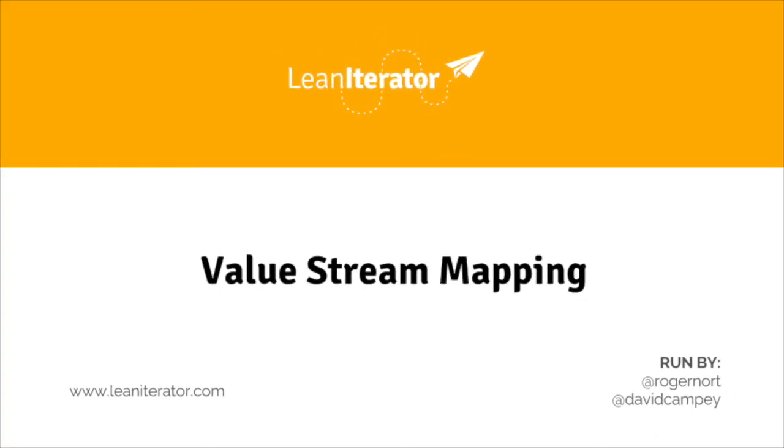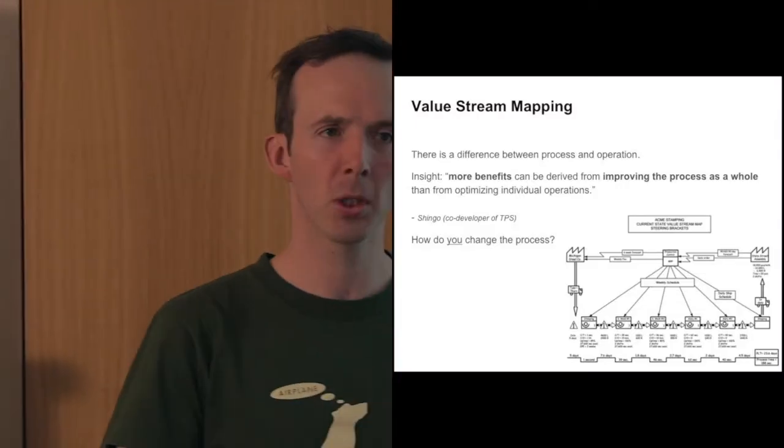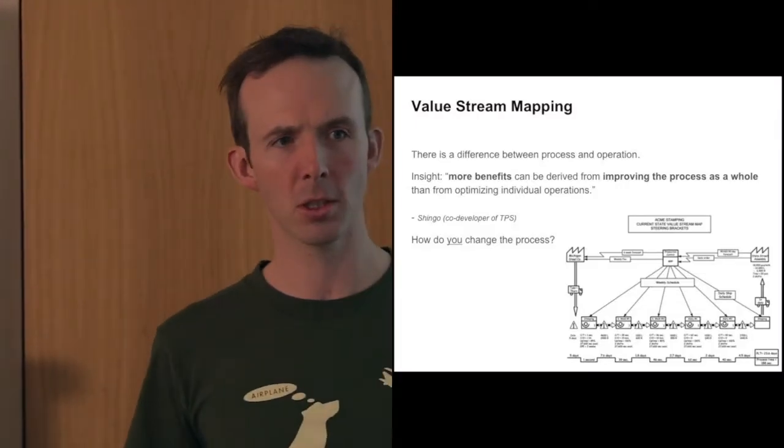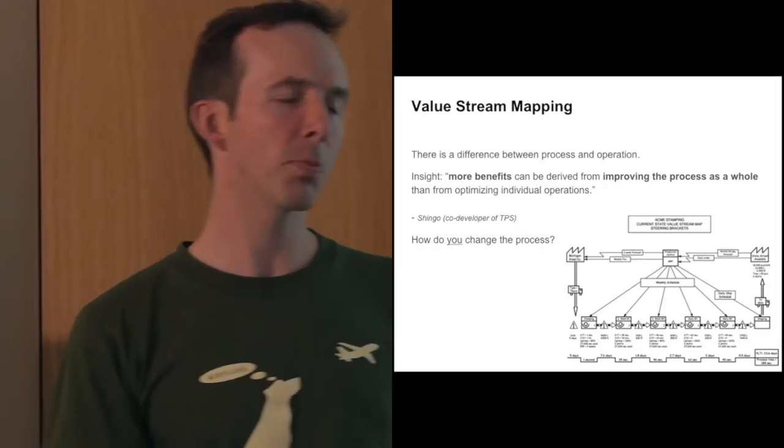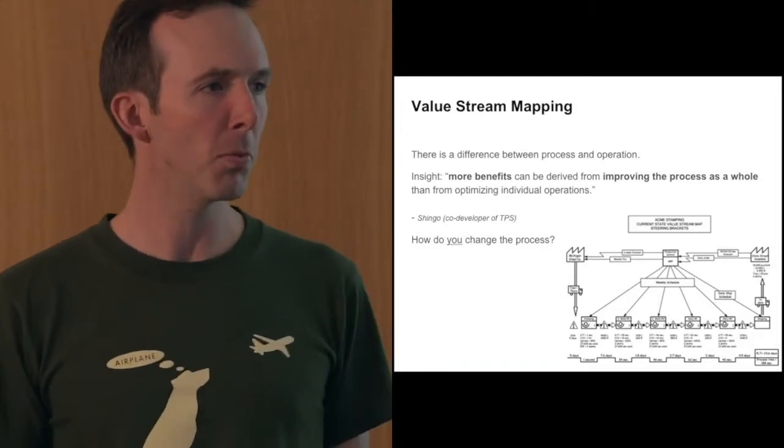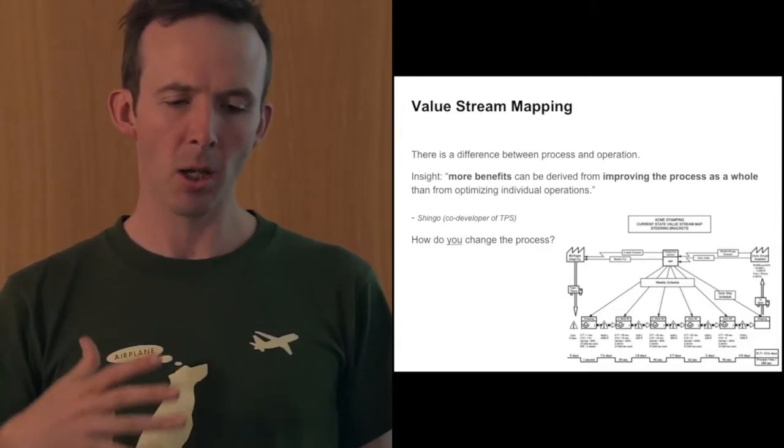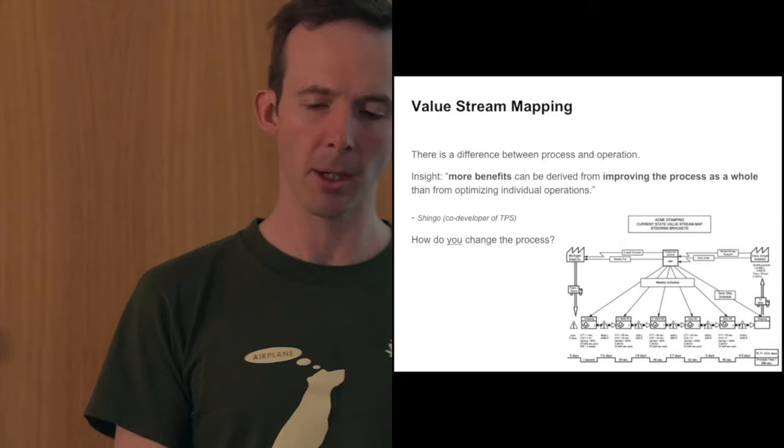When we get into value stream mapping now - a lot of what people focus on is improving operations, operational efficiency, trying to make things better. But one of the big insights from Shingo, who was the co-developer of the Toyota production system - has anyone heard of the Toyota production system? There's this thing out of which was born lean manufacturing as a movement, and a lot of important ideas came out of it.